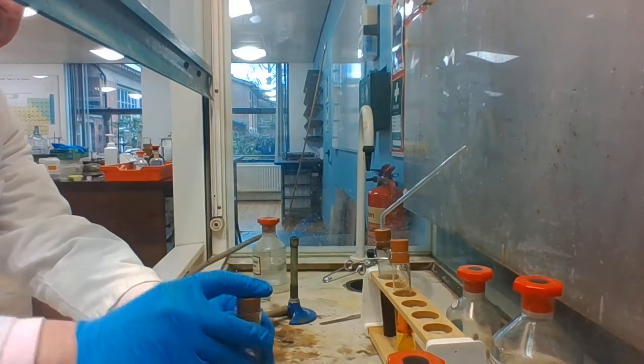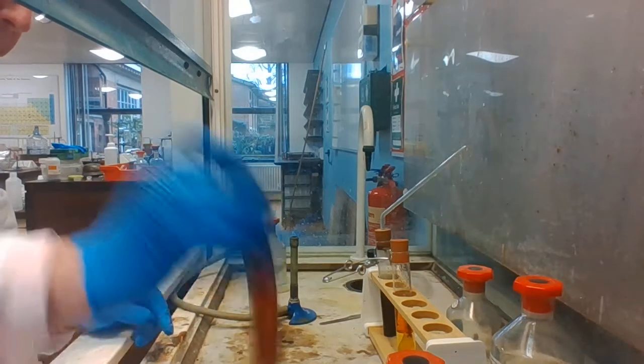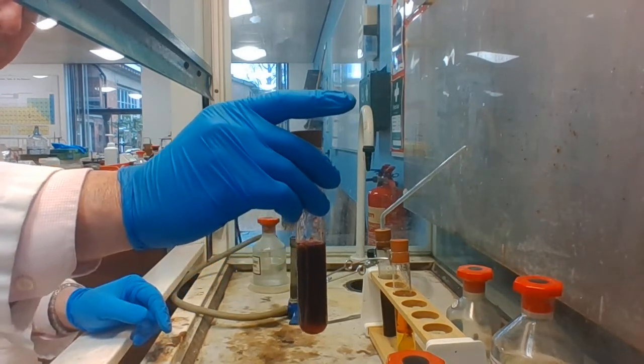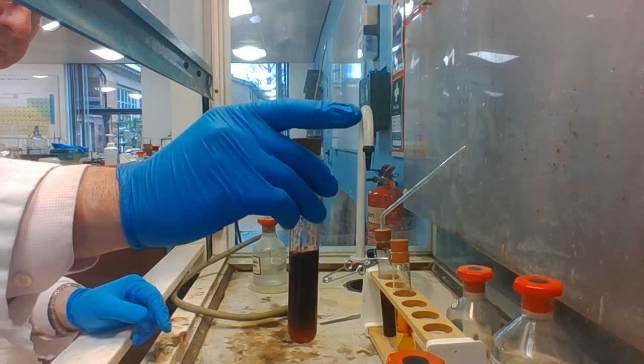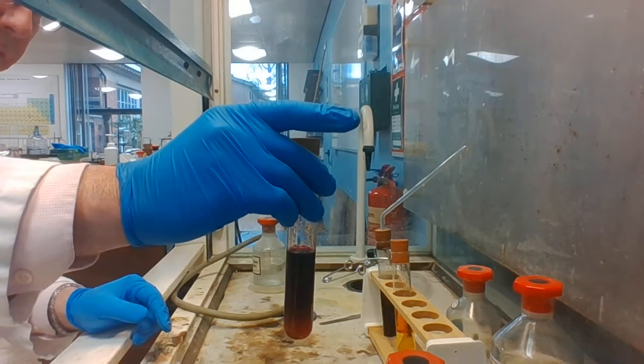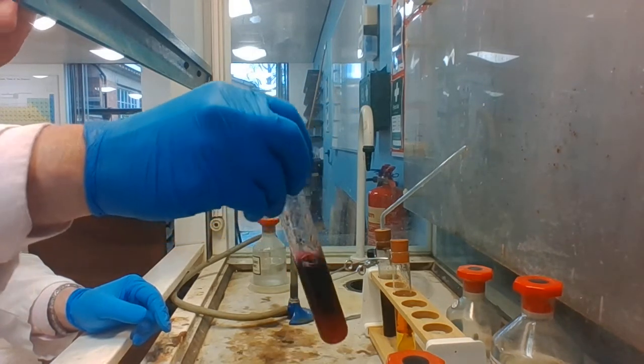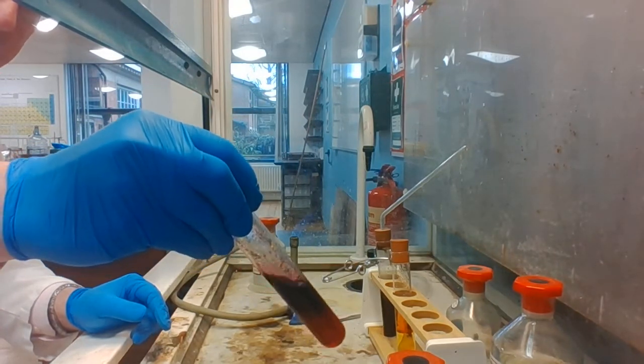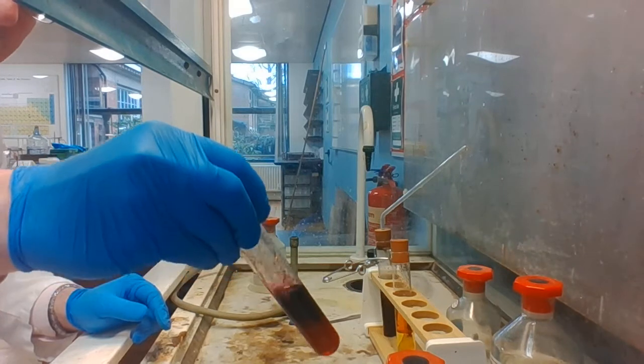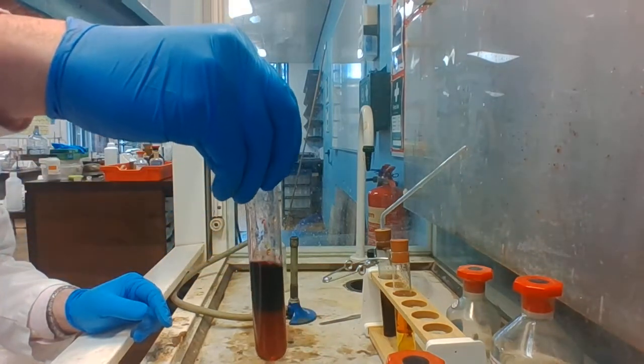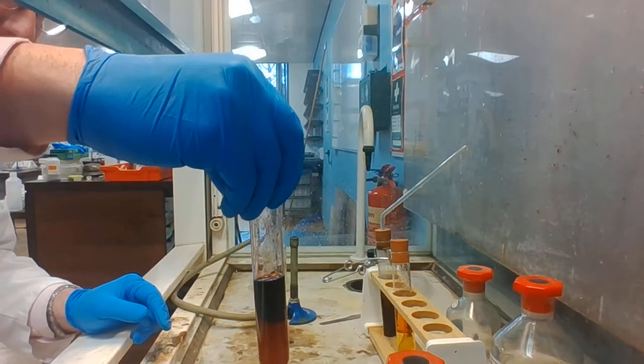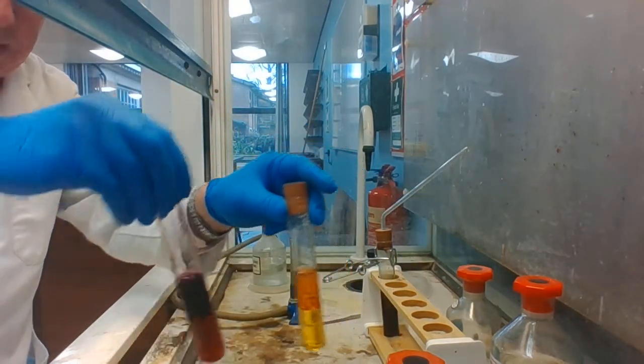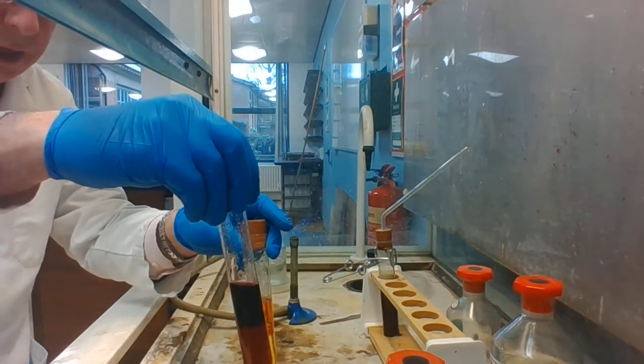If we do the same with the potassium iodide and let it settle, again you might be able to see that we have a purple color at the top there. That purple color indicates that iodine has been produced in this reaction. So the chlorine has displaced bromine from bromides and iodine from iodides.